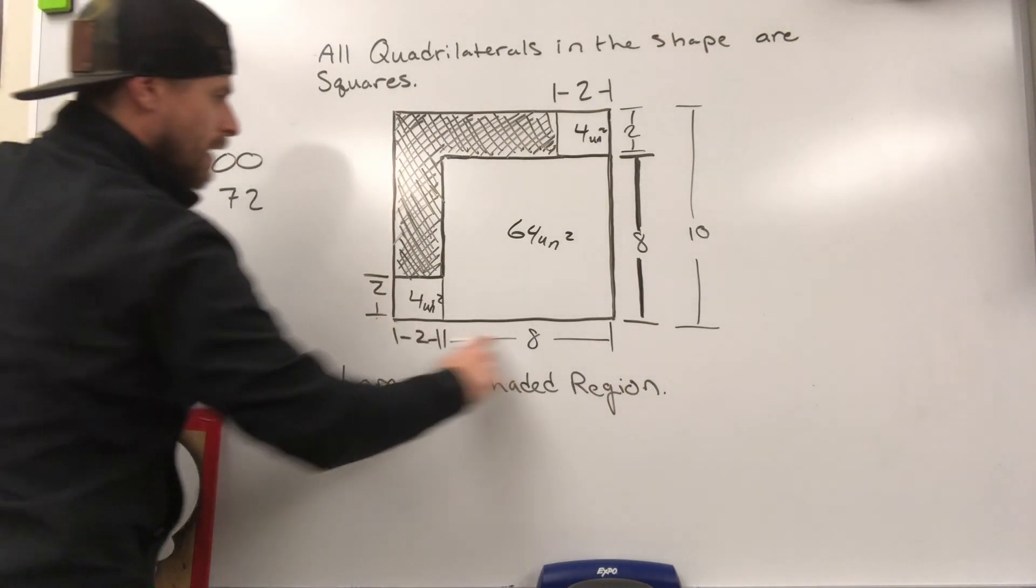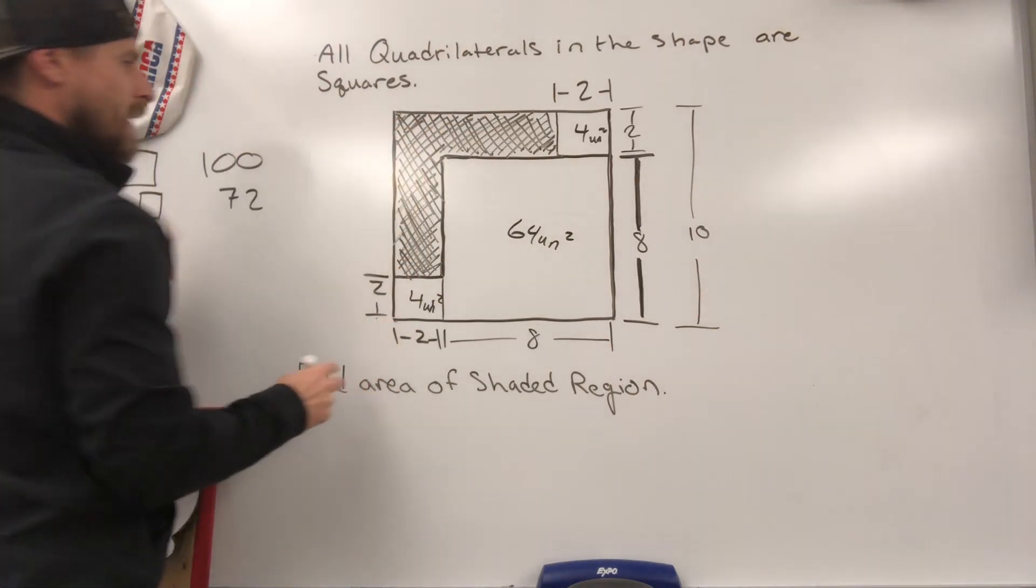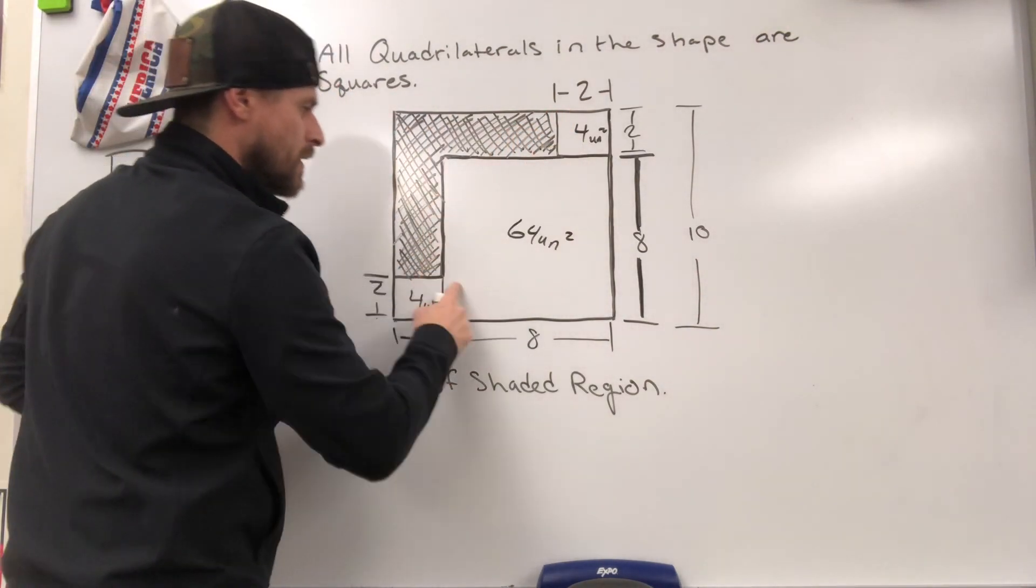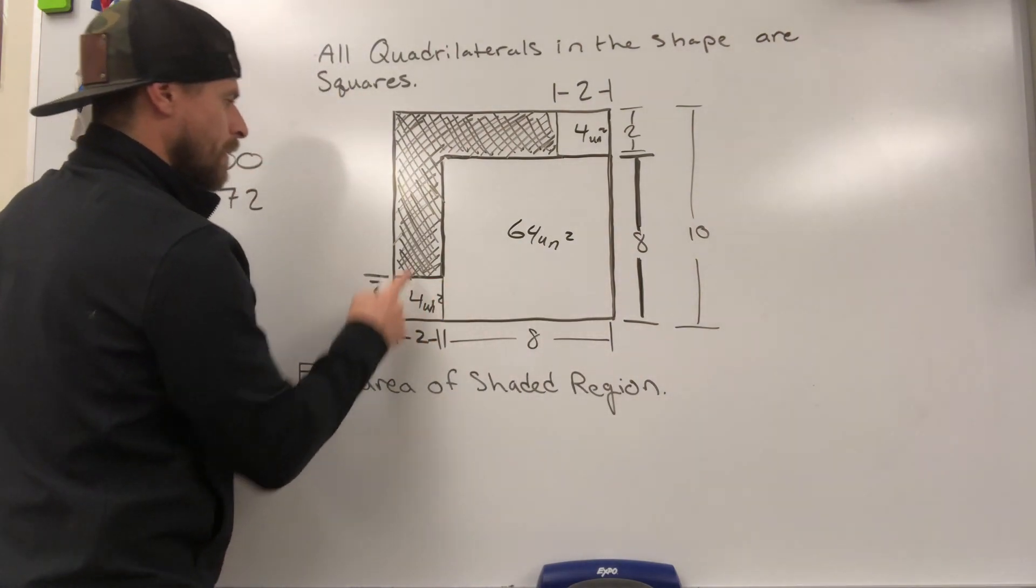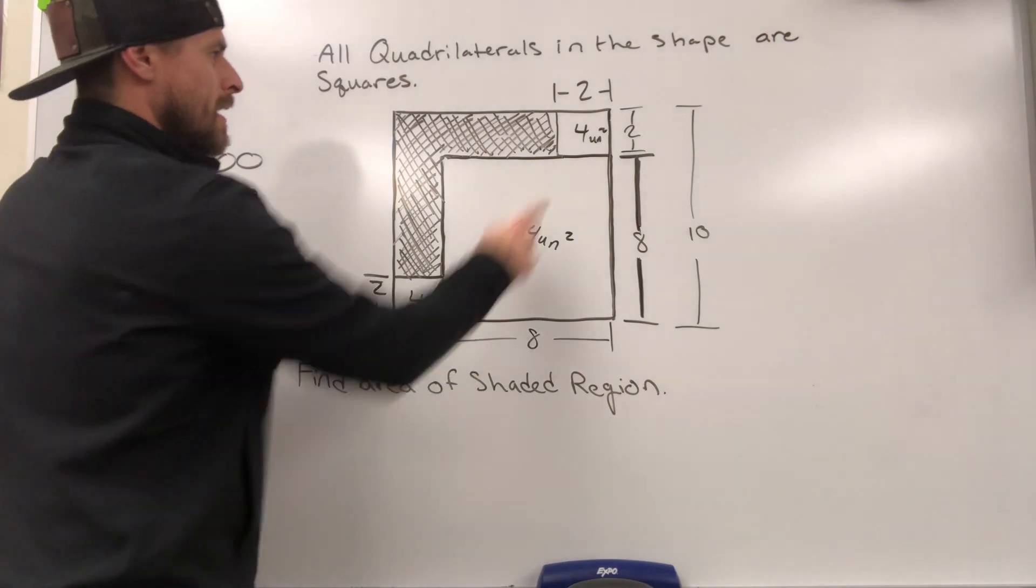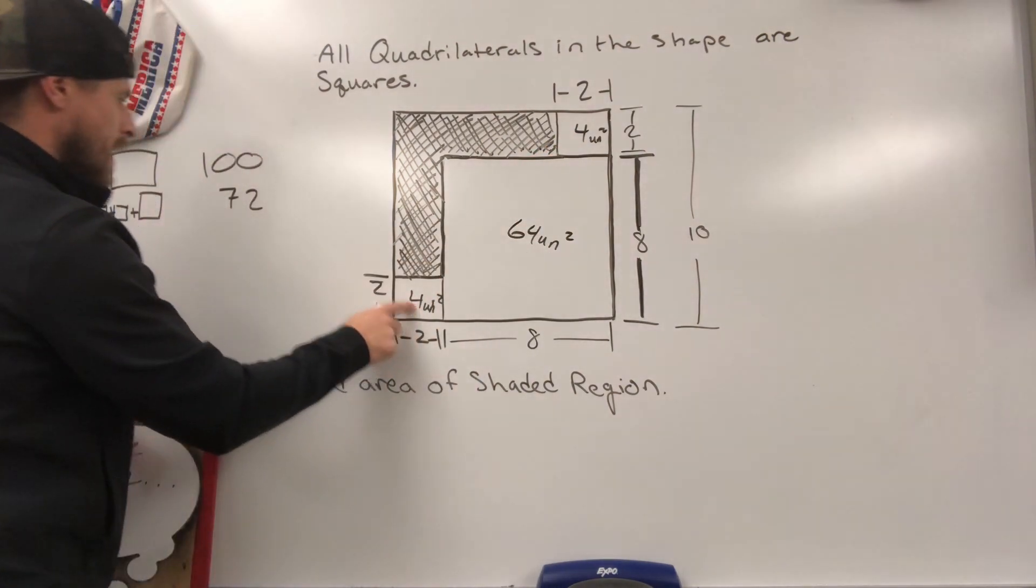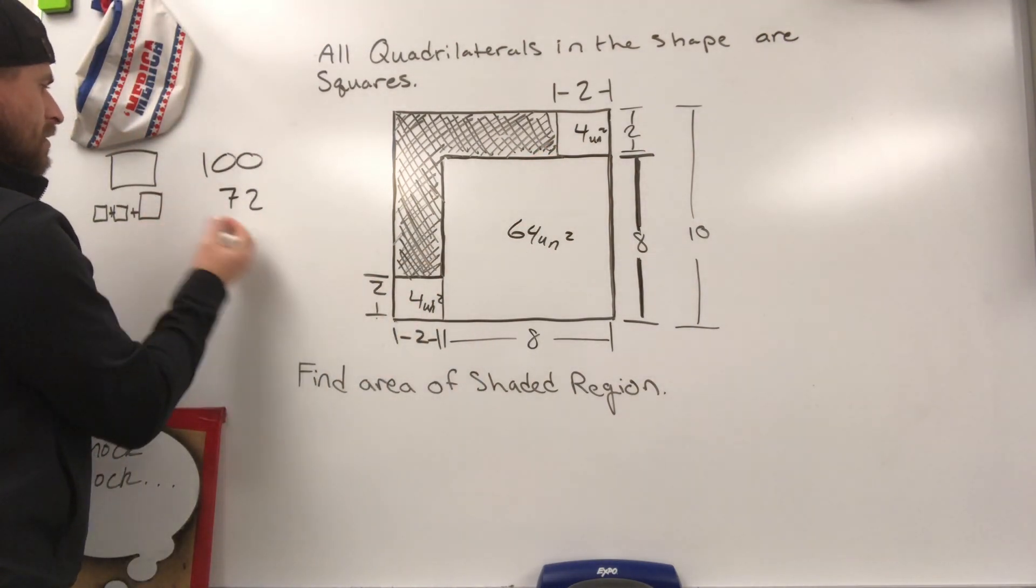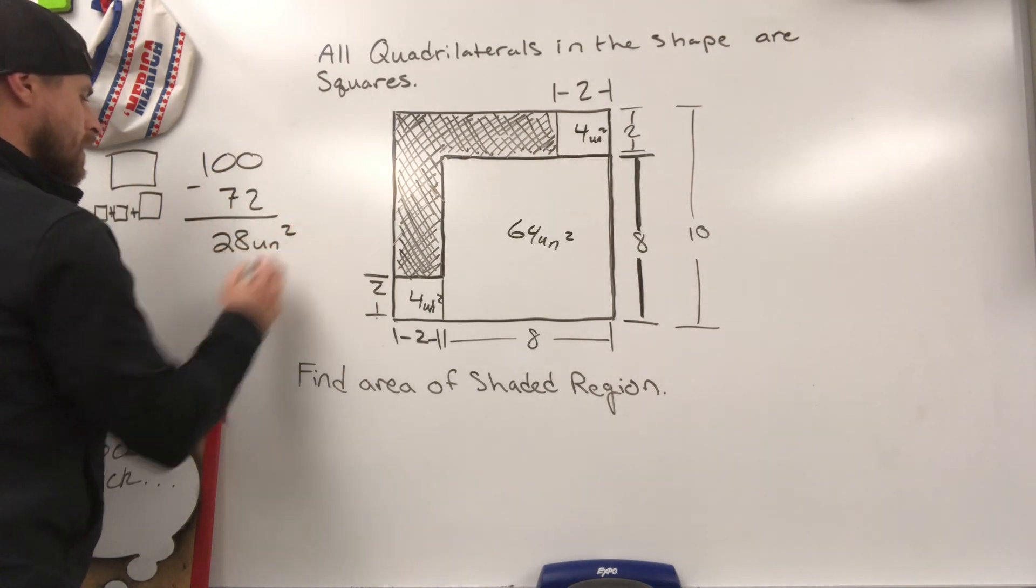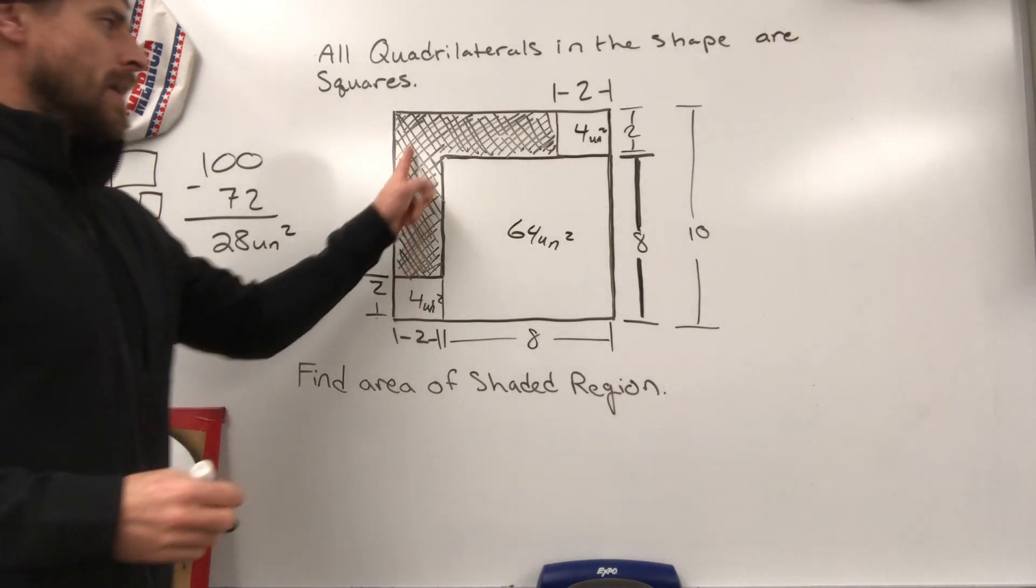Our big square, the total was 100. So we have 100. Now if we remove this amount, remove this amount, remove this amount, this is what's left over. So all we got to do is take these three values, add them together, we made 72, subtract them from the total, and we're going to be left with 28 units squared for the shaded region.